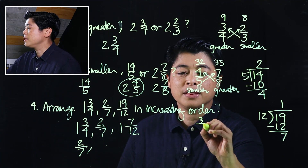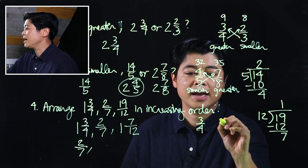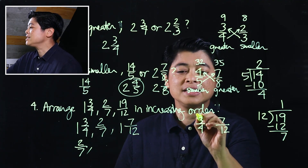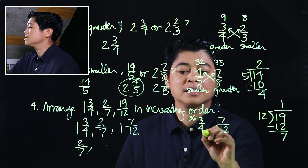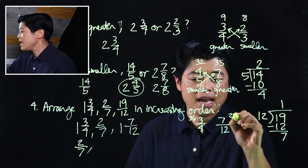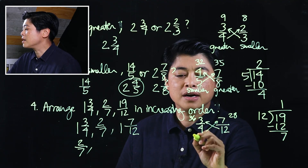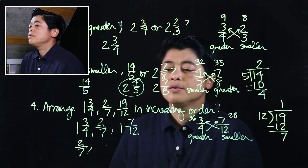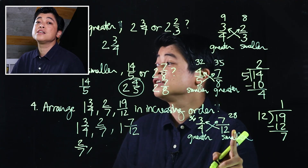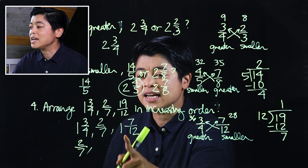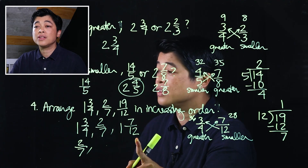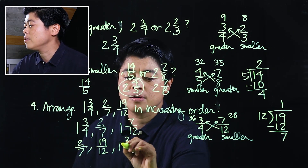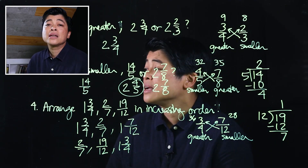Now we compare three-fourths and seven-twelfths. Multiplying across: 36 and 28. So seven-twelfths is smaller and three-fourths is greater. That means seven-twelfths comes next — but we write it as the original 19 over 12, and we end with one and three-fourths.